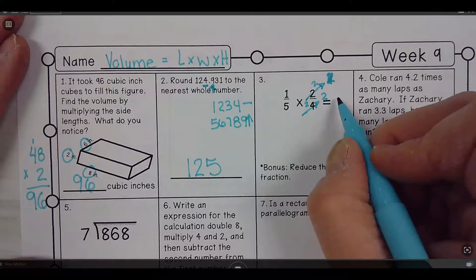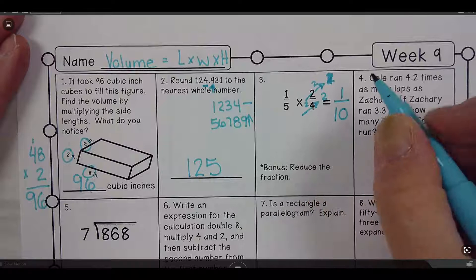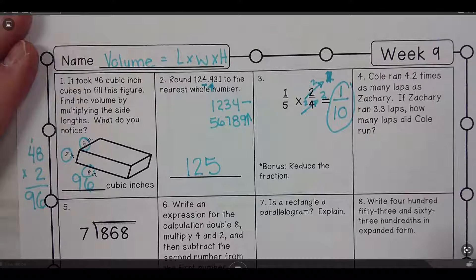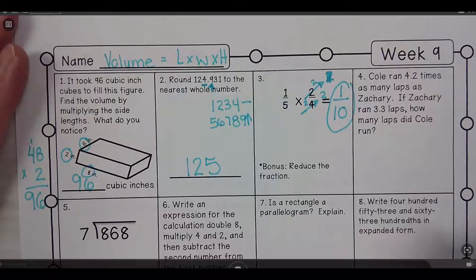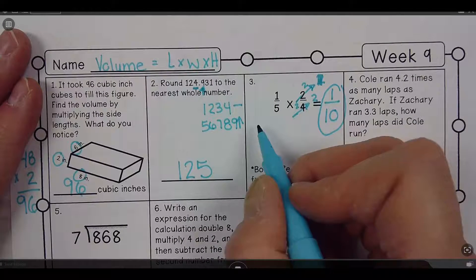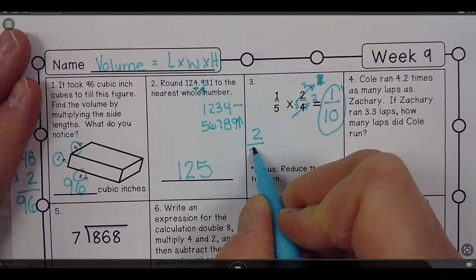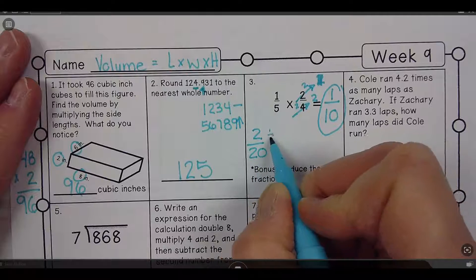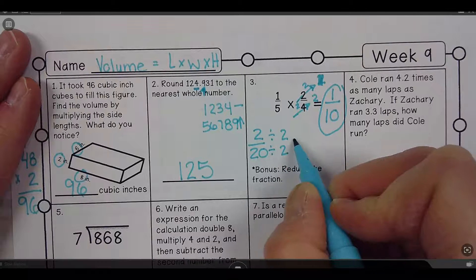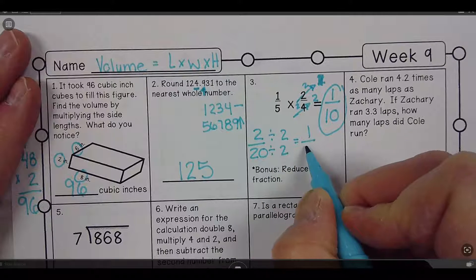Now that's actually already reduced because I reduced it before. If I was actually going to do the multiplication, I could go 1 times 2 is 2, 5 times 4 is 20, and I can divide the top and the bottom both by 2. 2 divided by 2 is 1 and 20 divided by 2 is 10.